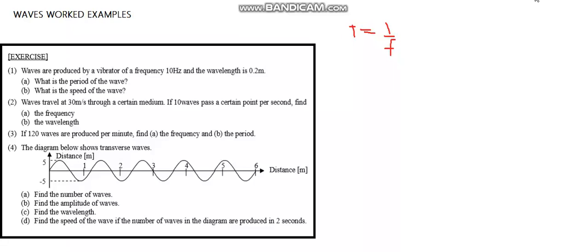Question 1 says: waves are produced by a vibrator at a frequency of 10 hertz, and the wavelength is 0.2 meters. It says calculate: what is the period of the wave, and what is the speed of the wave.